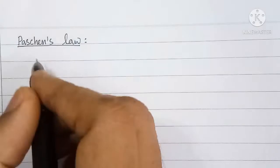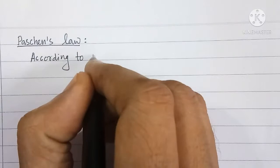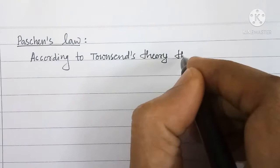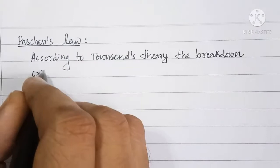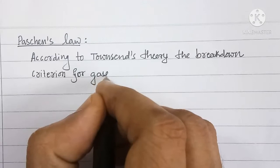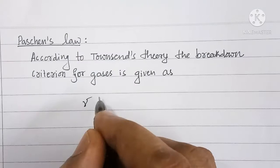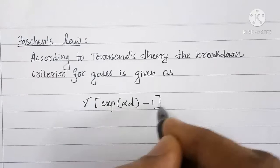According to Townsend's theory, the breakdown criterion for gases is given as gamma into exponent of alpha d minus 1 equal to 1. This we have already studied.